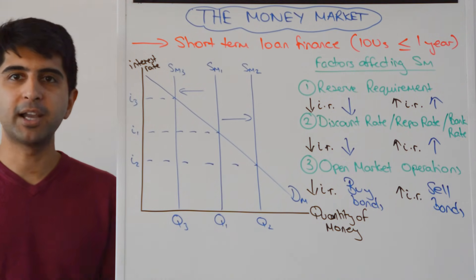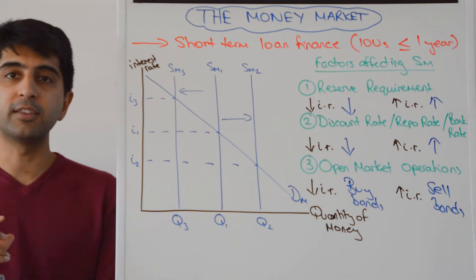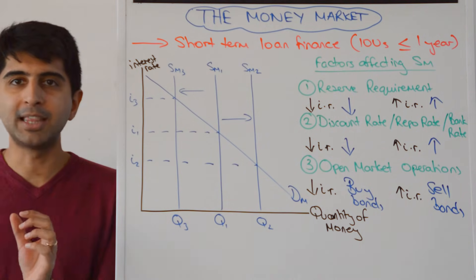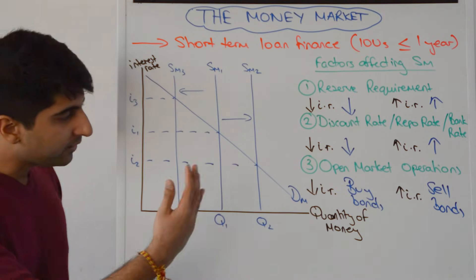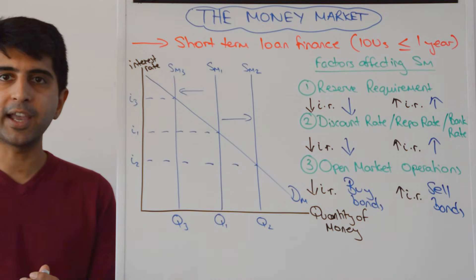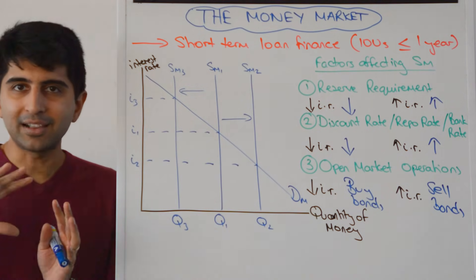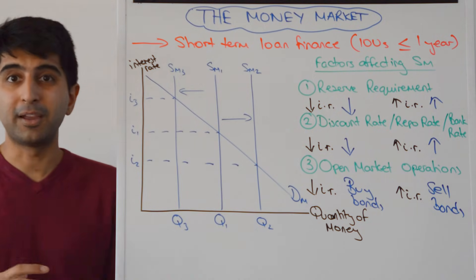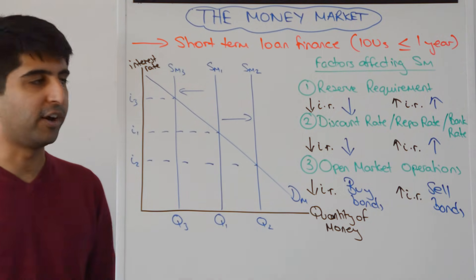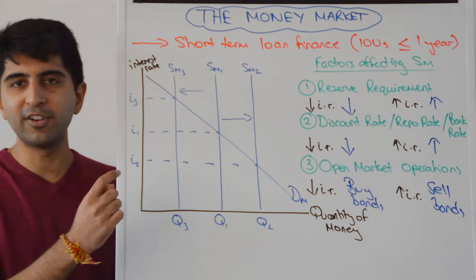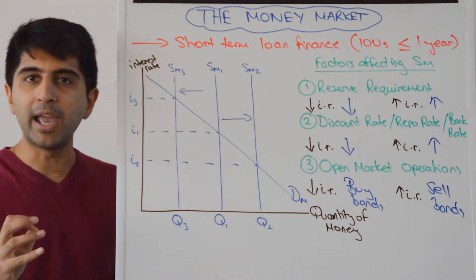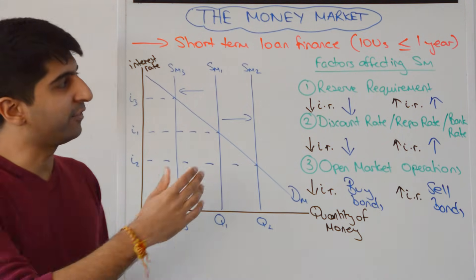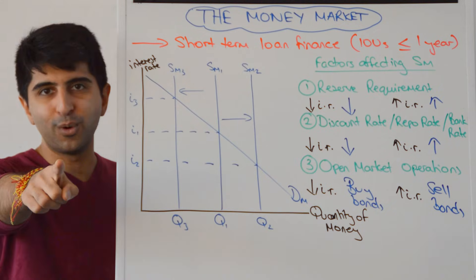So that explains what the money market is all about and where interest rates come from — very much set by central banks looking to meet their inflation targets. Yes, the demand curve for money can shift and that can alter interest rates, but that's more of a theoretical idea. In reality, the supply curve of money dominates because of the control the central bank has over it. Thank you so much for watching — hopefully now you understand the money market and where interest rates, also known as short-term interest rates, come from. I'll see you all in the next video.